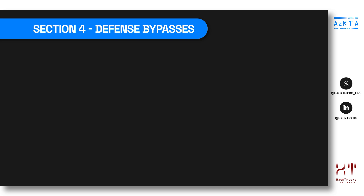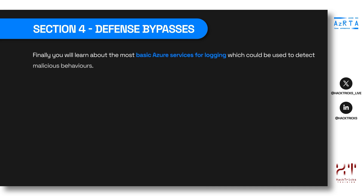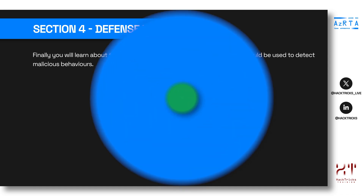The fourth and final section is called Defense Bypasses. In this section, we will learn about the most basic Azure services for logging, which could be used to detect malicious behavior. We are going to be focusing on the most basic Azure service that provides logs we can use to detect attacks happening inside an Azure environment.